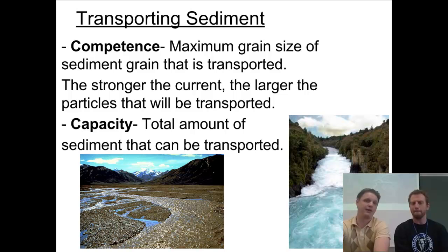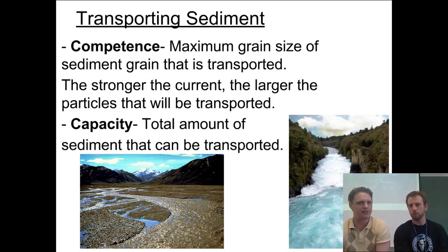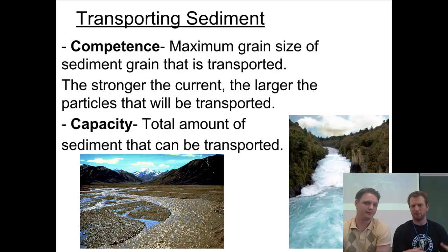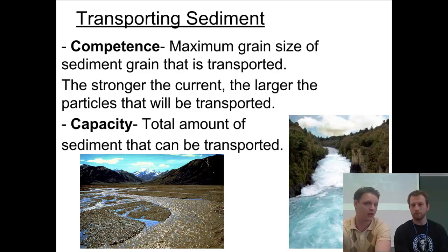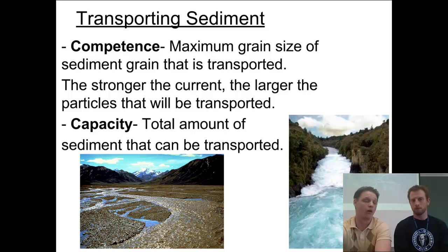A couple of definitions here: the competence of a stream or river is the largest sediment size that can be transported. The stream on the left doesn't look like it's moving fast — it's not going to pick up large boulders. But the one on the right, that's where you've got boulders the size of cars getting moved around. If the current is stronger, the force behind the water is stronger and able to move larger things. So the competence of the river on the right is more than the river on the left.